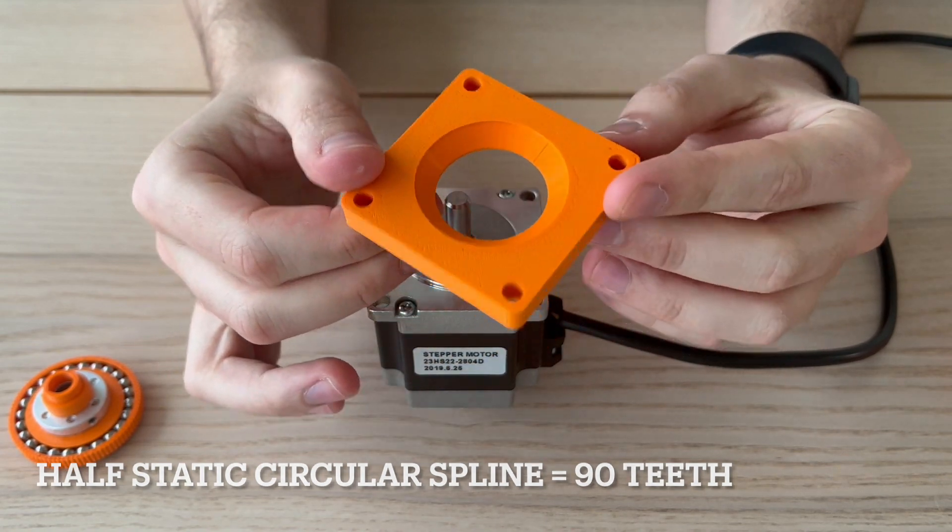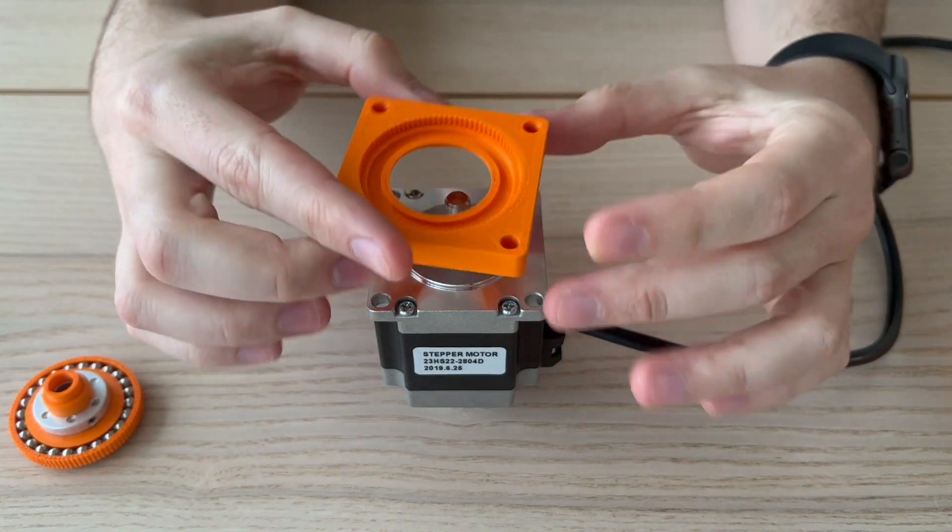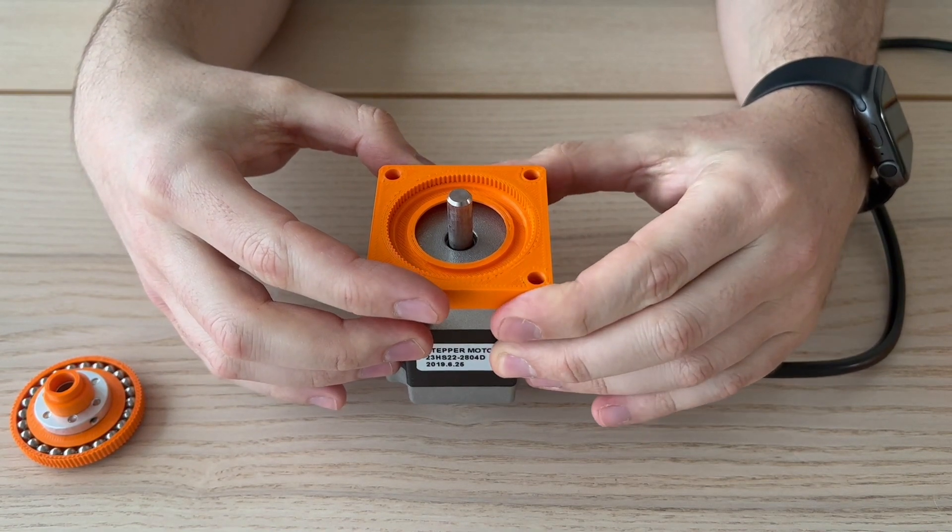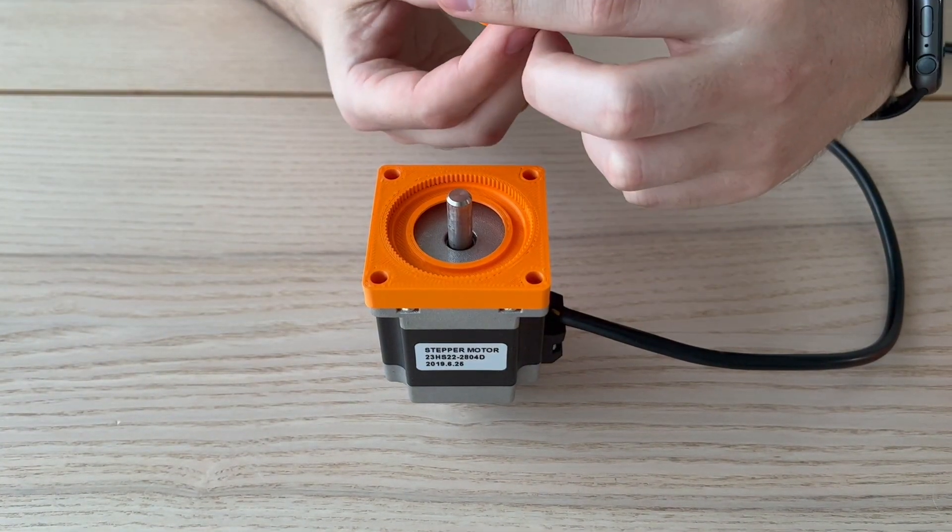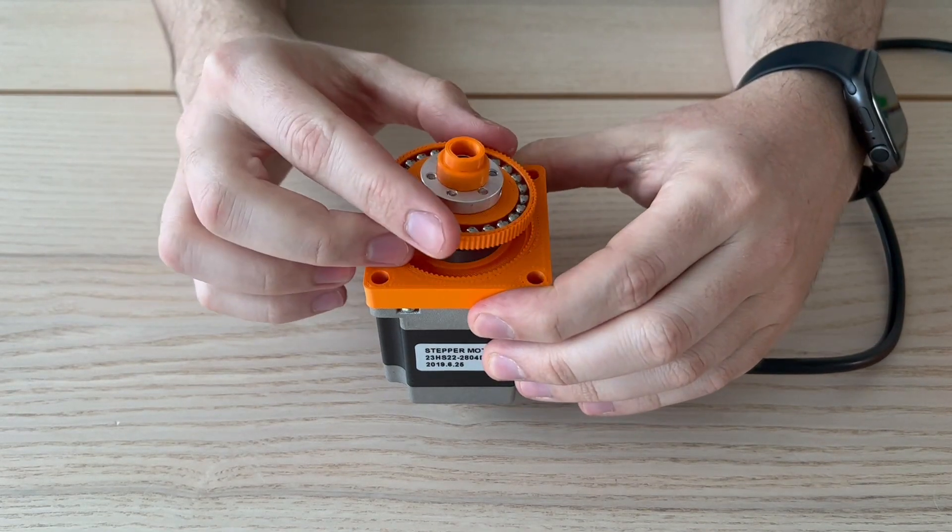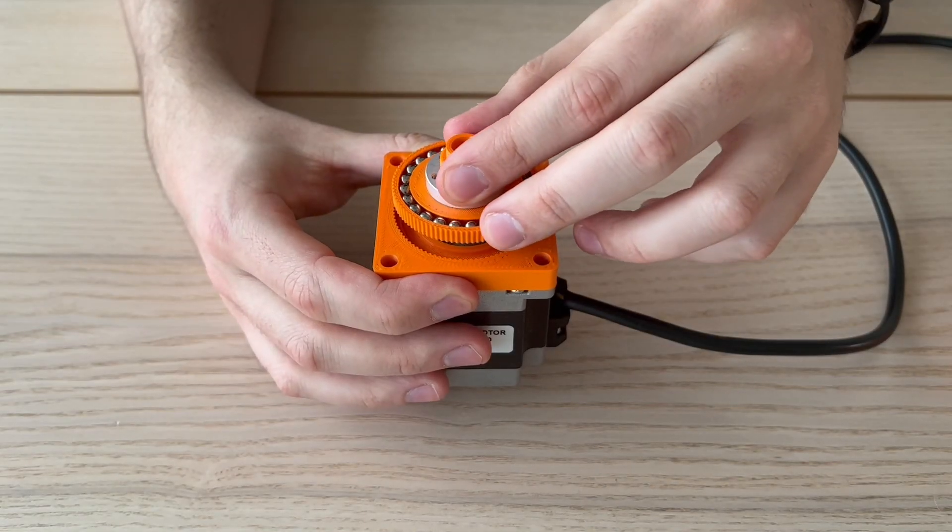Now we are going to attach the half circular spline. This plastic piece will be attached to the base of the stepper motor. To keep the whole assembly aligned, we introduce the flex spline to center the base.